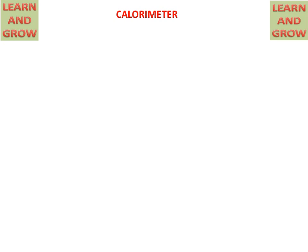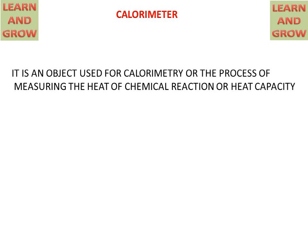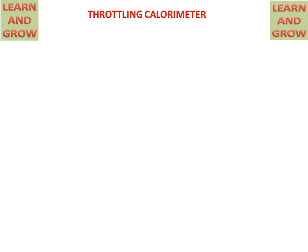Today we will discuss about throttling calorimeter. Firstly we will discuss about what is calorimeter. We know that calorimeter is an object for measuring the heat capacity of a chemical reaction. And in the throttling calorimeter, firstly we will discuss about all the parts of the throttling calorimeter.